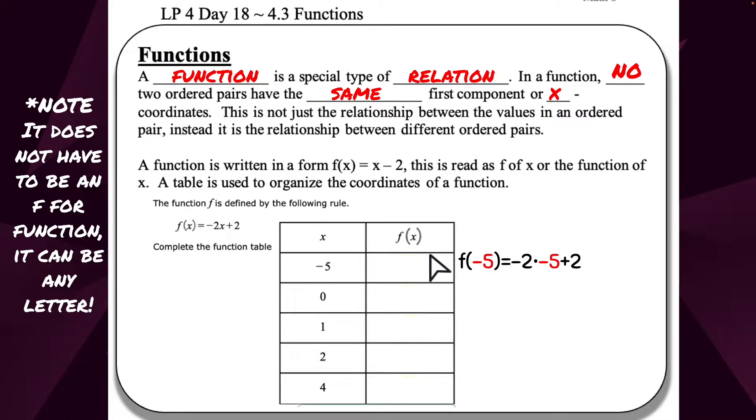So f of negative 5 equals negative 2 times negative 5 plus 2. I just took this equation and plugged in negative 5 for x. Simplifying, negative 2 times negative 5 is 10, positive 10. Two negatives make a positive. Plus 2, so I get 12. If I plug in negative 5 for this function, I get 12.